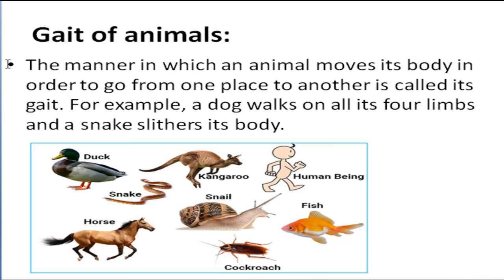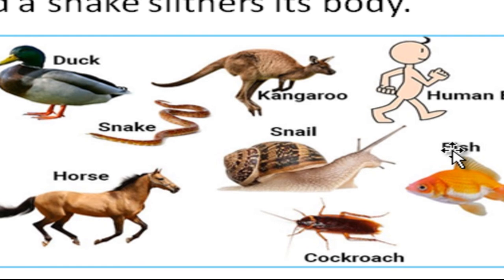Our next keyword is gait of animals. The manner in which an animal moves its body in order to go from one place to another is called its gait. For example, a dog walks on its four limbs and a snake slithers its body.